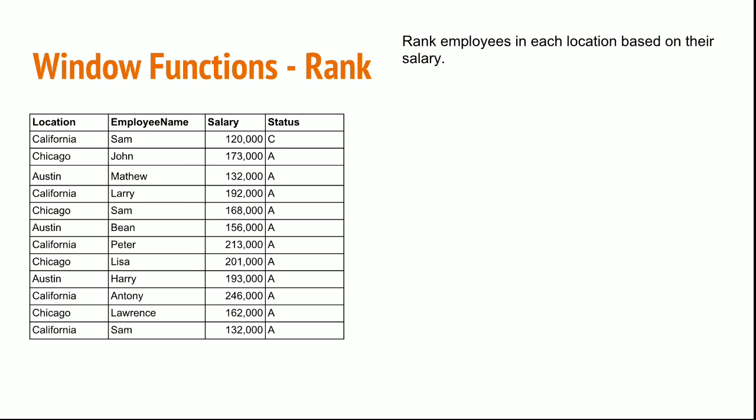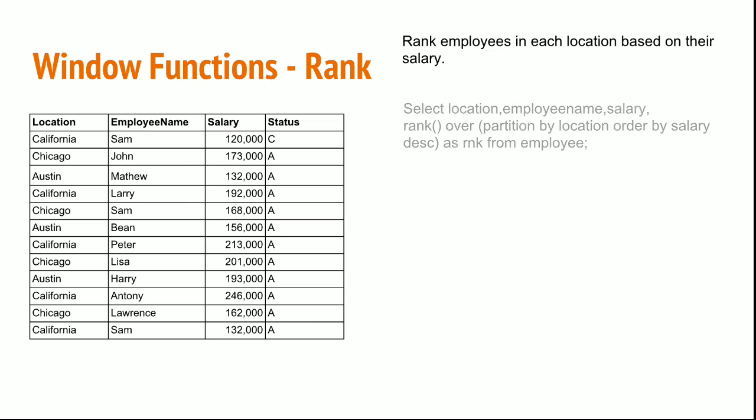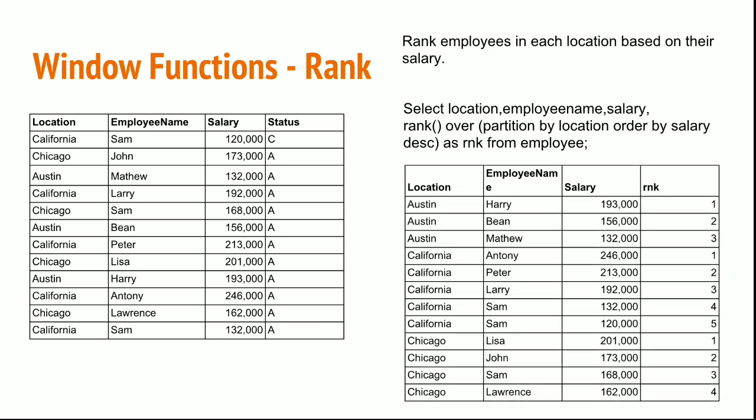I need to use a rank function, which is a window function. The statement goes like this: SELECT location, employee_name, salary, then RANK() OVER (PARTITION BY location ORDER BY salary DESC) as rnk FROM employee. I am partitioning by location because I need to find salaries based on location, and ordering by salary descending so the highest salary goes first.